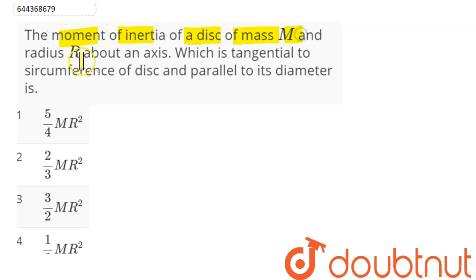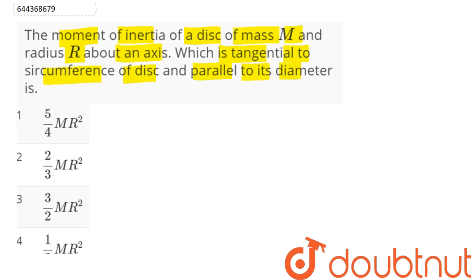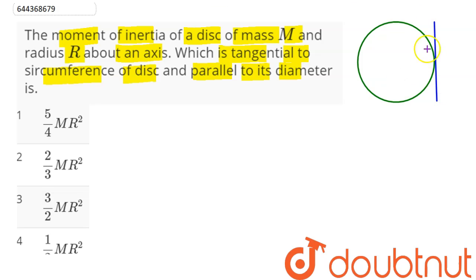The question is: what is the moment of inertia of a disc of mass m and radius r about an axis which is tangential to the circumference of the disc and parallel to its diameter? We need to find the moment of inertia about this tangential axis, which lies in the plane of the disc and is tangent to it.